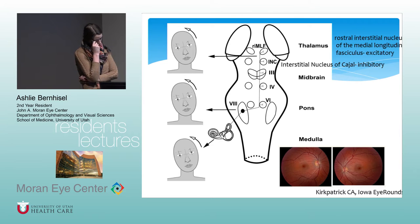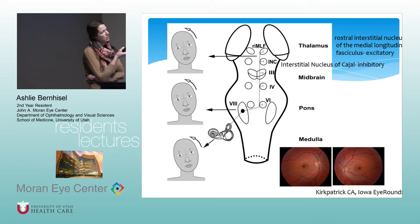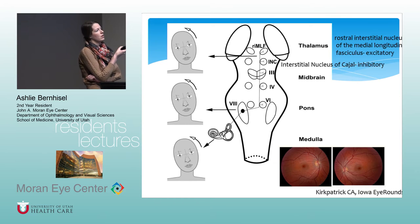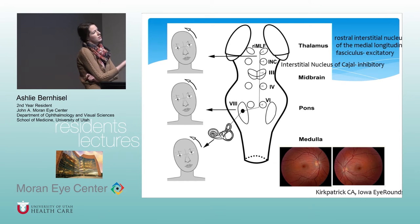There's a really good case on Iowa Eye Rounds if anyone's interested. This shows that a lesion anywhere on the right side — from the utricle, saccule, up to the pons — will cause an ipsilateral head tilt. Here there's a right head tilt, and you can see on the fundus photographs that there's excyclotorsion of the right eye and excyclotorsion of the left eye.